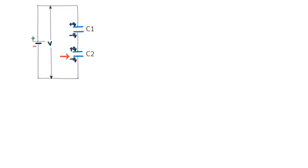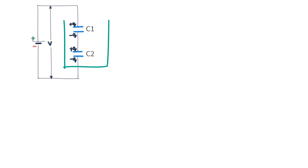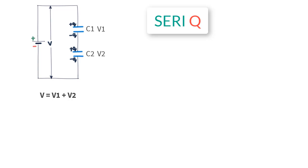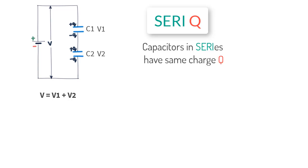This movement of charges will keep happening until the upper plate of C1 reaches the same potential as that of the positive terminal of the battery, and the lower plate of C2 reaches the negative potential of the battery. So the potential difference across this set is the same as that of the battery. What you see here is that the charge on each capacitor becomes the same if they are connected in series. To remember this important point, just remember the term C3Q — when capacitors are in series, the charge Q is the same across all capacitors, but the voltage V is different for each.